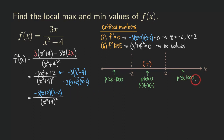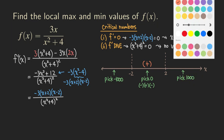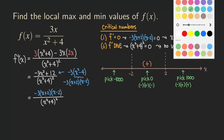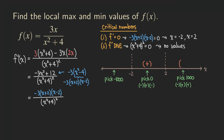For the interval to the right of two, we plug in 1000. The negative three is always negative. Then 1000 plus two is positive, and 1000 minus two is also positive. We have only one negative sign, so the result is negative. The function is decreasing from two to infinity.